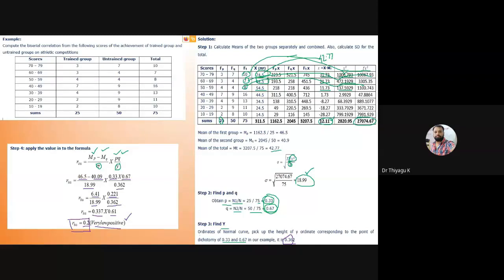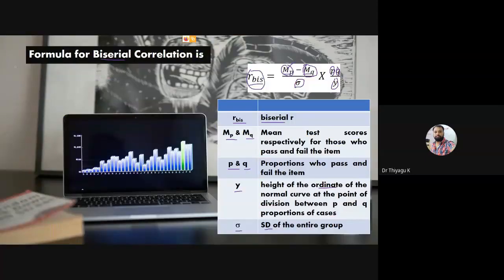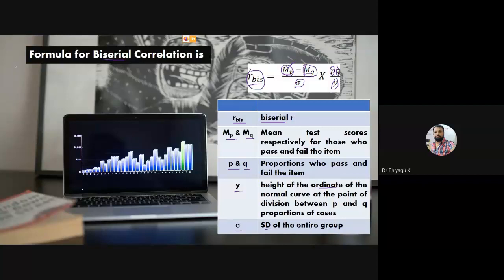There are some limitations of biserial correlation: it cannot be used in regression equations; it does not have standard error estimates; and unlike other correlations it is not limited to the range of ±1, which creates problems when comparing with other coefficients of correlation.